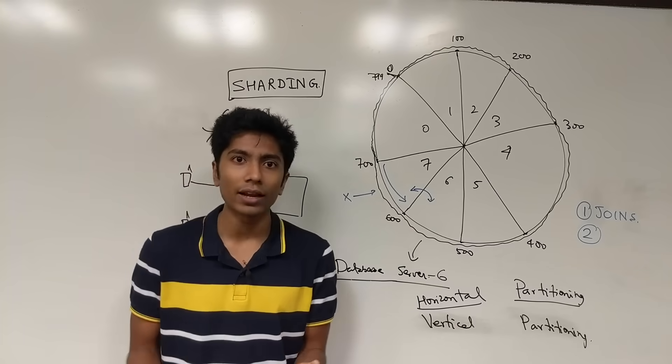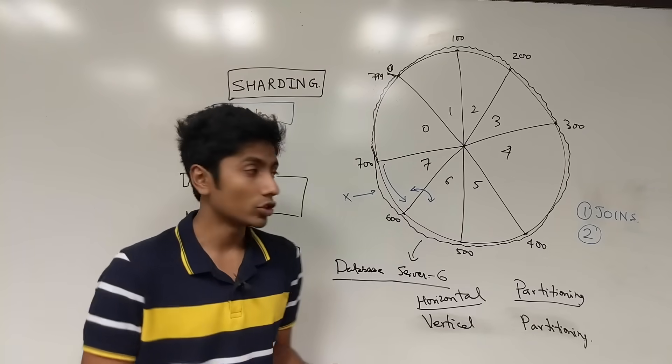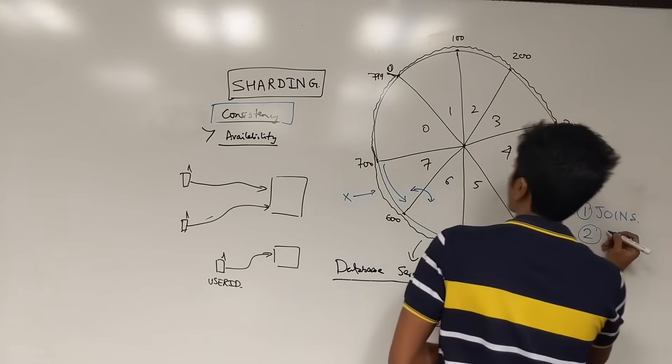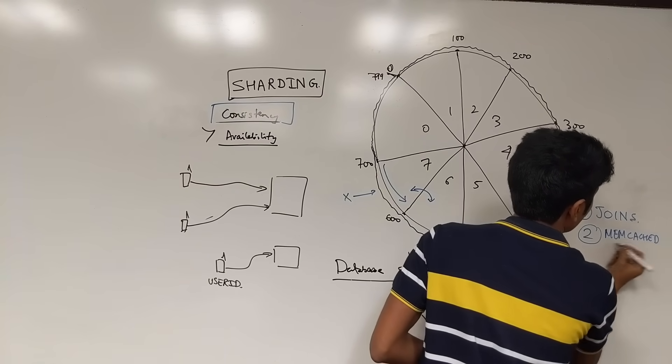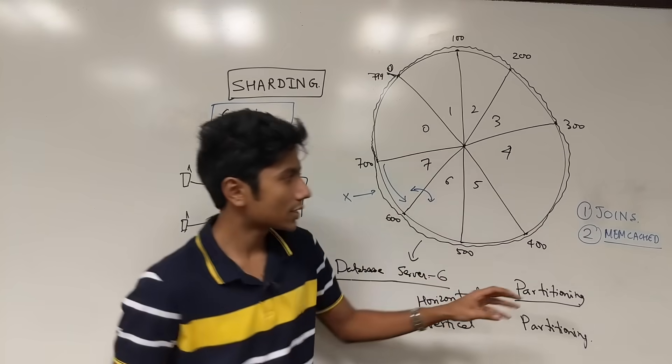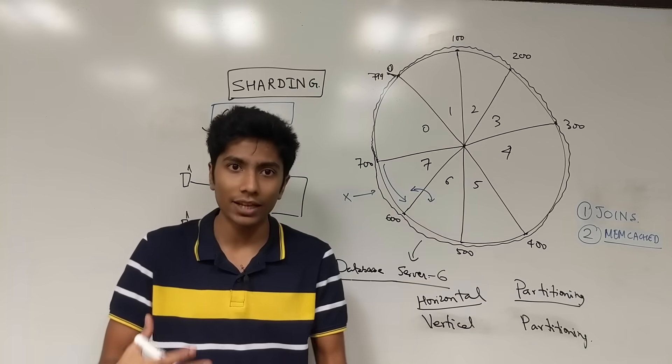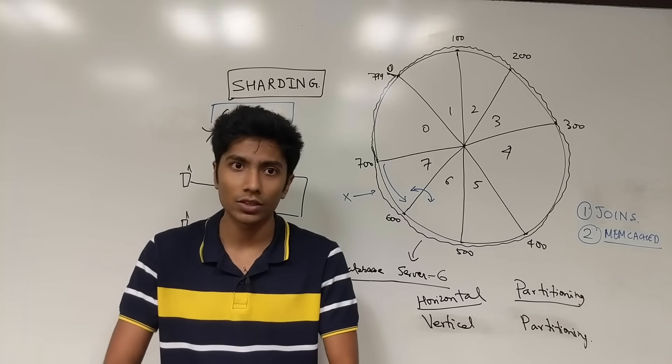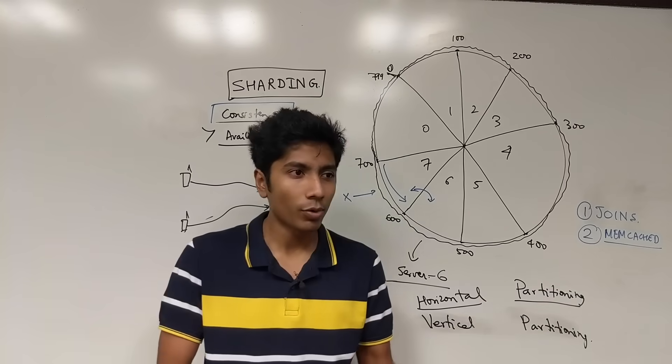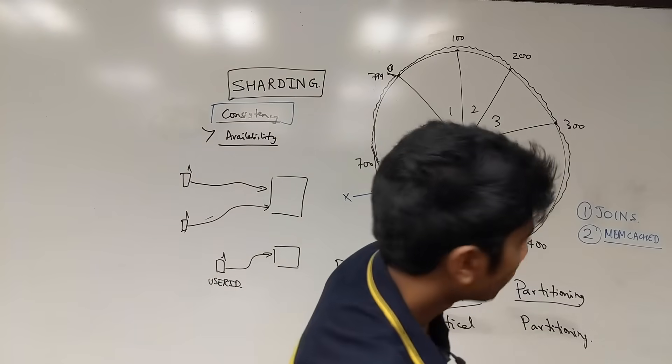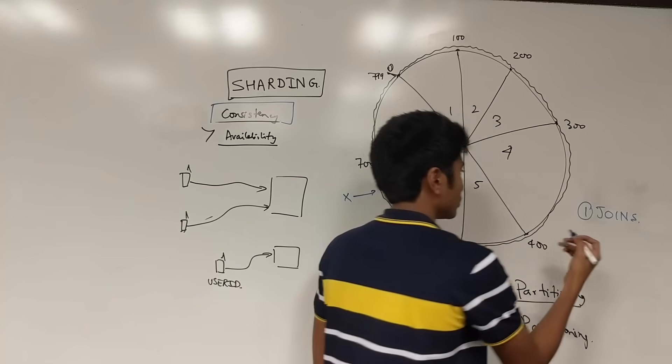But we want our database servers to be flexible in number. So one of the really good algorithms for this is consistent hashing, you should have a look at that. There's one database which actually uses this and that is memcached. This doesn't really implement consistent hashing. You can use an application logic above the database memcached to get your work done. So it's not really a problem, it might be a problem, but you can't have dynamic number of shards.